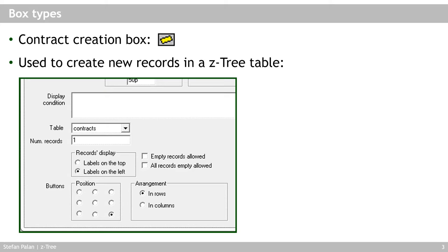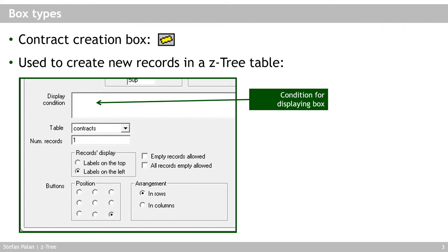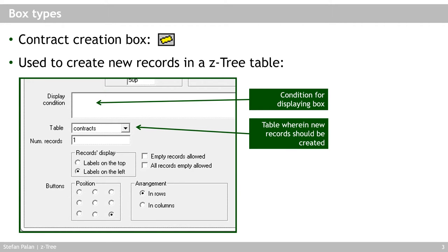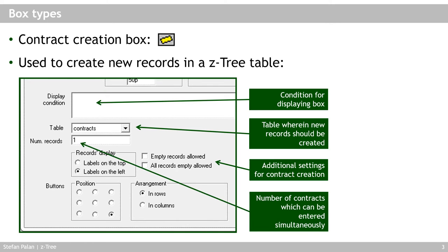You would use a contract creation box to create this offer. In addition to the typical size and margin settings and the display condition, you need to specify a table that the newly created rows will go into. You can also have extra settings like allowing empty records or allowing all records to be empty, particularly when you allow multiple records.